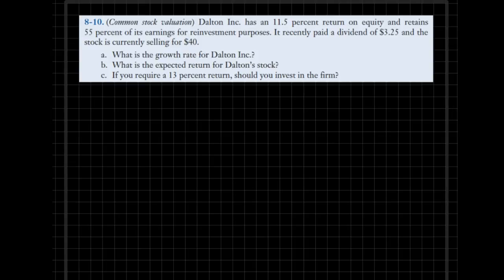We are told that the return on equity is 11.5% and the company retains 55% of its earnings. Why are we given these facts? The primary reason is to figure the growth rate, and the first part of the problem is about that. Let's go ahead and make the simple calculation.